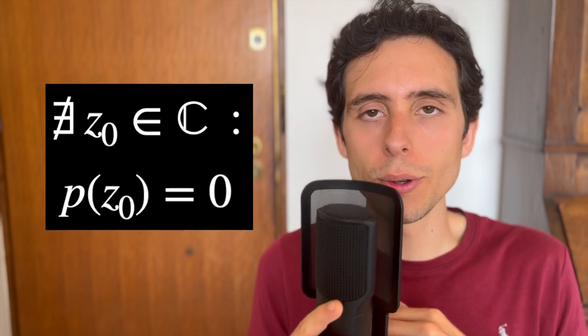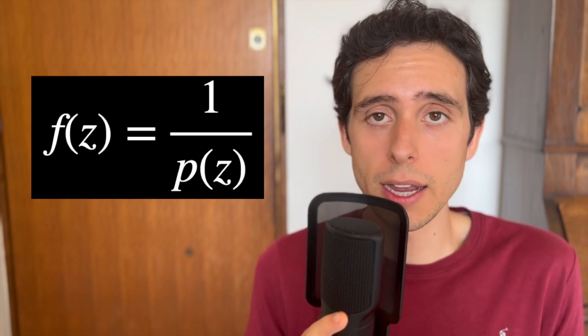Let's prove it. By contradiction, suppose such z0 does not exist. Then we can construct a function of this kind, 1 over p of z.